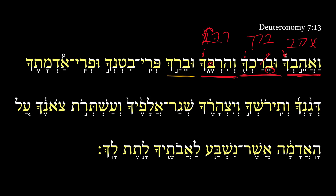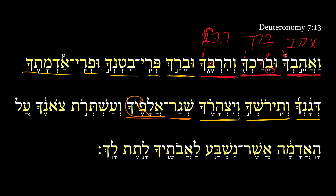He will bless you — another piel perfect. He will bless the fruit of your womb and the fruit of your ground: your grain, and your wine, and your oil. Then we get the offspring of your herds — notice the plural here, of your herds — and the young of your flock upon the land.